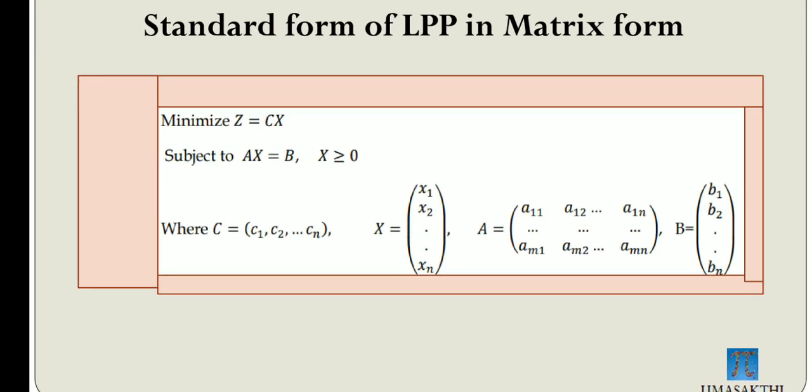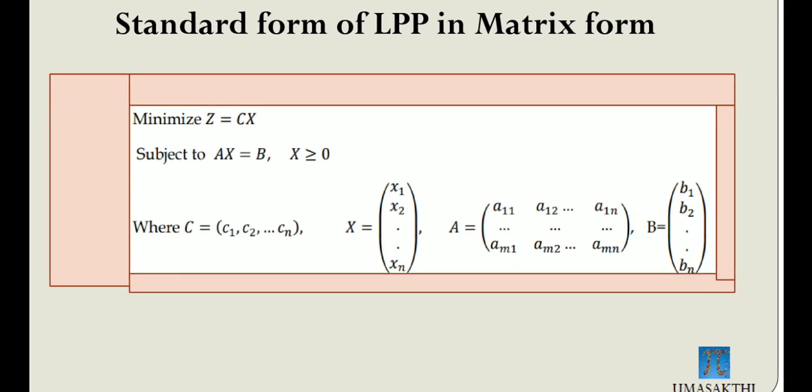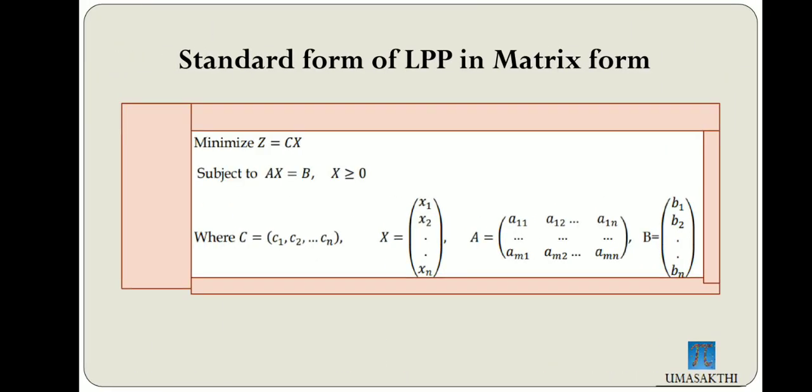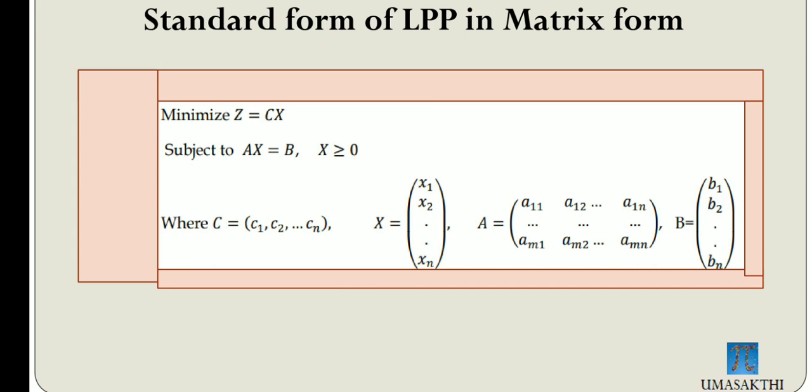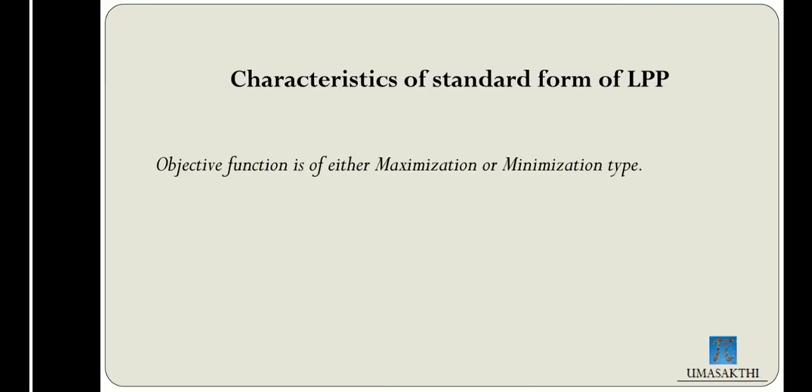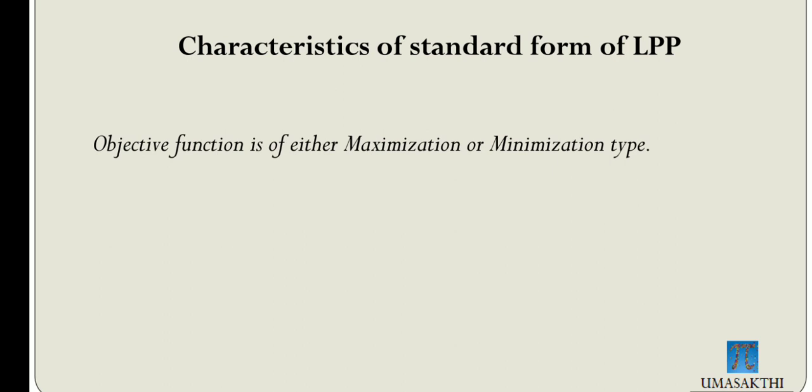We will see the matrix formula — the standard form of LPP in matrix form. This is called Minimize and Maximize. Now we will look at the characteristics of the standard form of LPP.